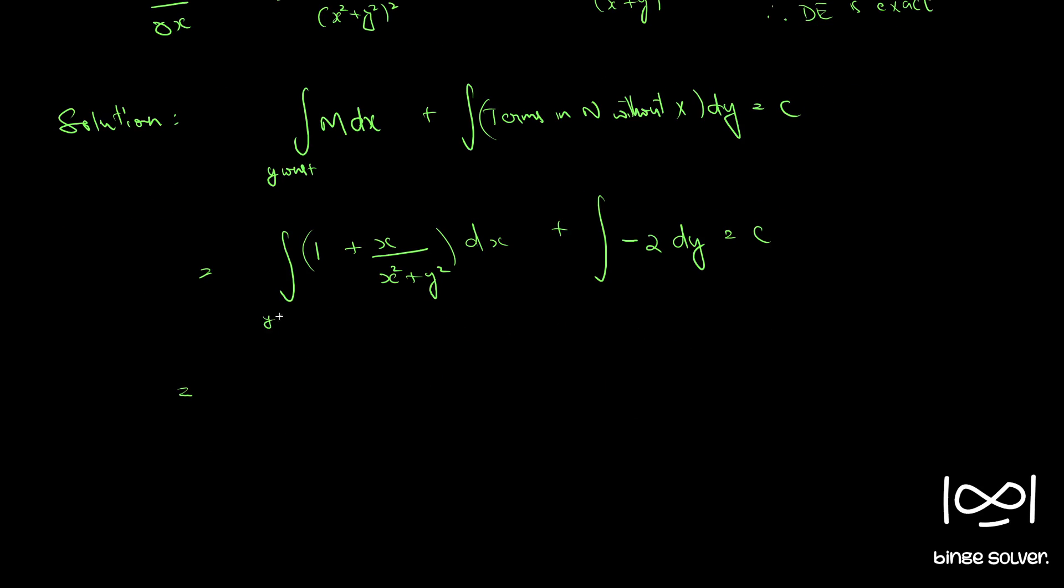Here y is a constant, remember y is a constant. So, we have the integral of 1 is x plus integral x by x square plus y square, y as a constant. So, we have x here, so we can write 1 by 2 into 2x integral. So, the differential of denominator is in the numerator, we can write 1 by 2 log x square plus y square minus 2y equal to c.